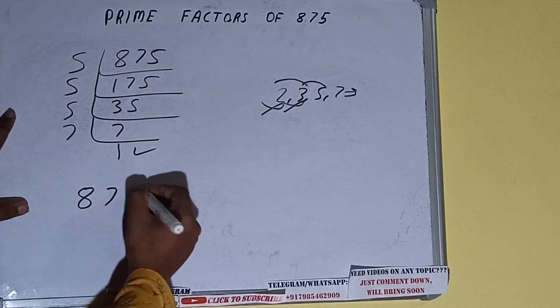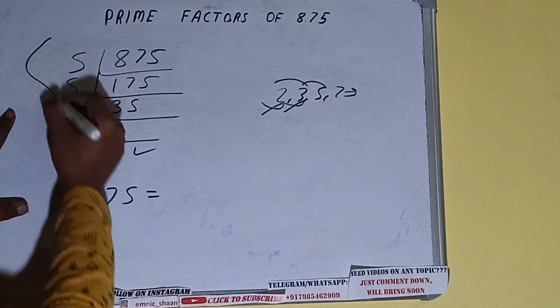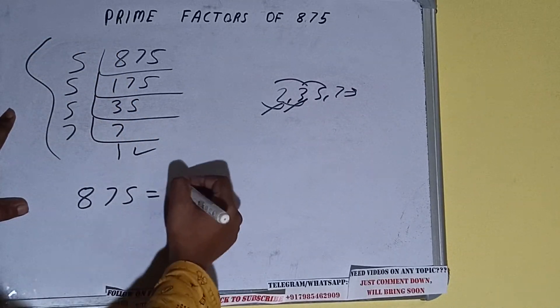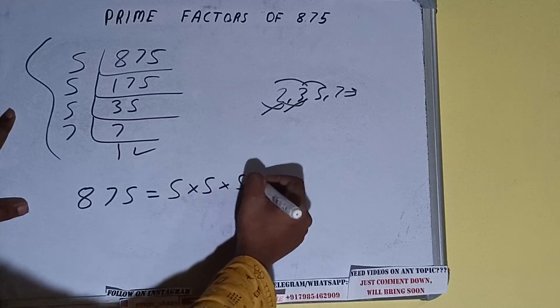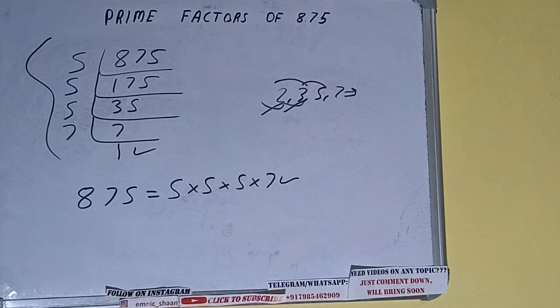It equals to multiply whatever we have on the left-hand side, that is 5 times 5 times 5 times 7. That will be the answer. So this is all about prime factors of 875.